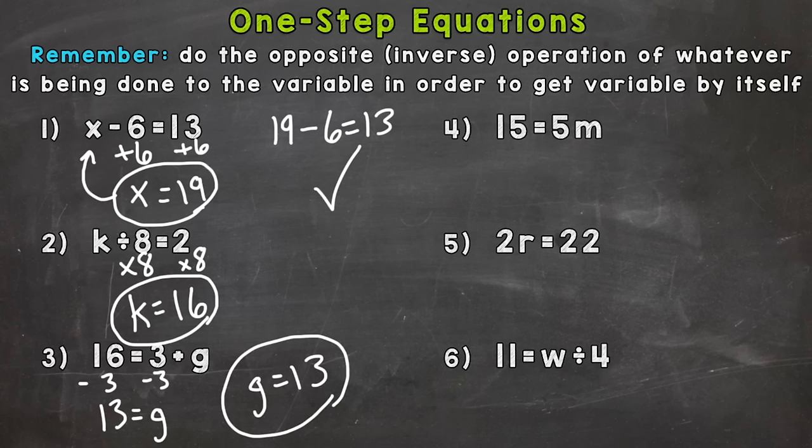We have 15 equals 5m. Now a number right next to a variable or letter means multiplication. So we're multiplying by 5 here. So the opposite of multiplying by 5 would be dividing by 5. That would give us our m by itself. And I put it in fractional form. And fractions are division here. That means divide by 5. So do it to both sides. So we have the m by itself. And then 15 divided by 5 gives us 3. So m equals 3.